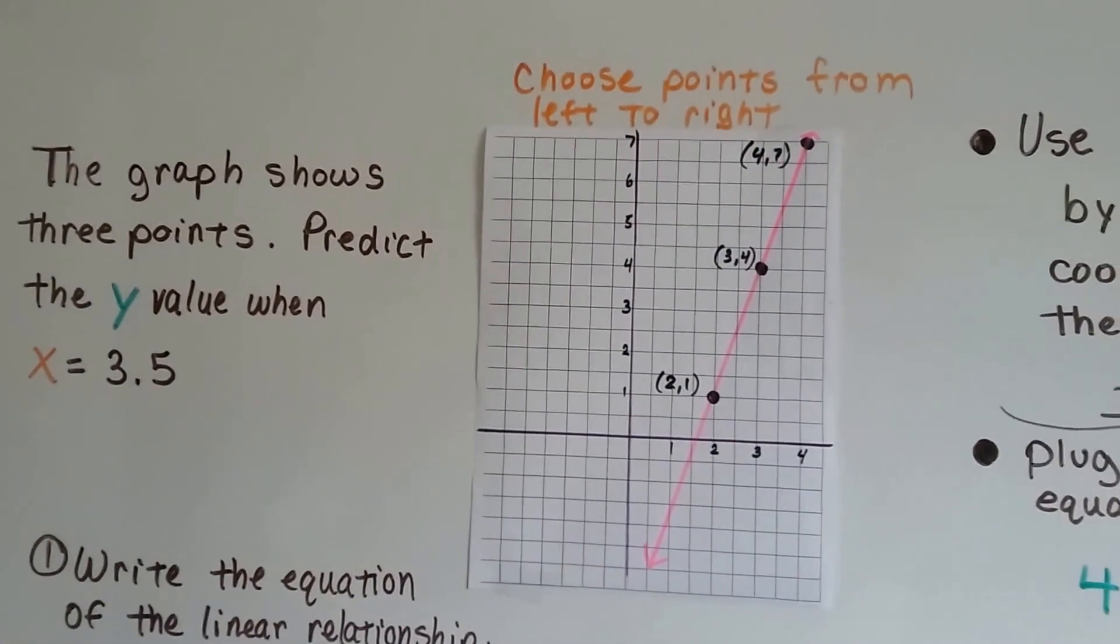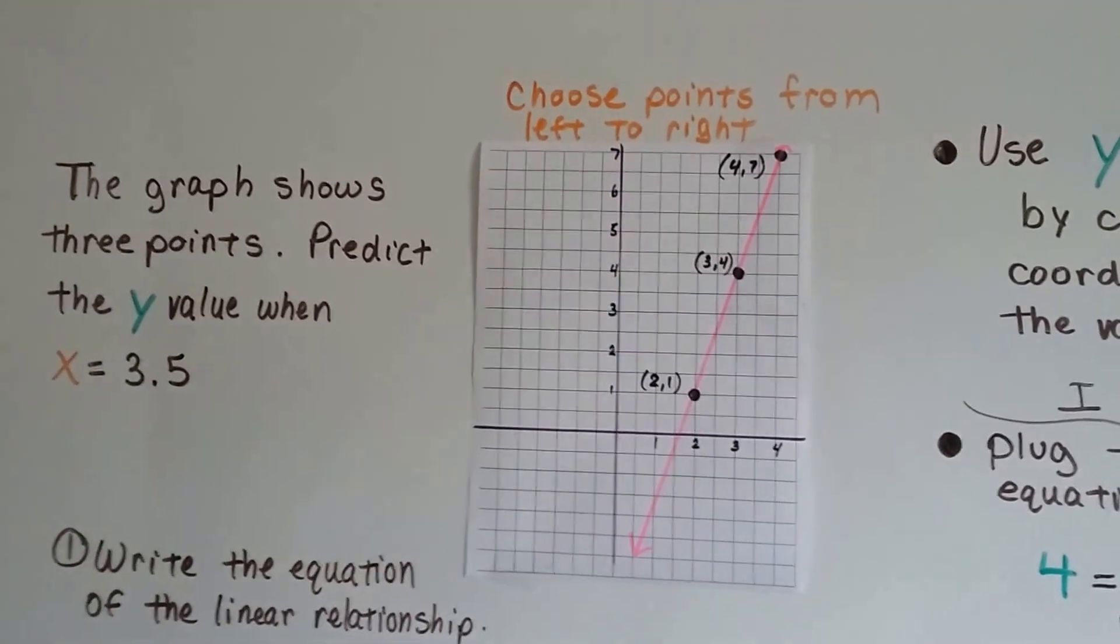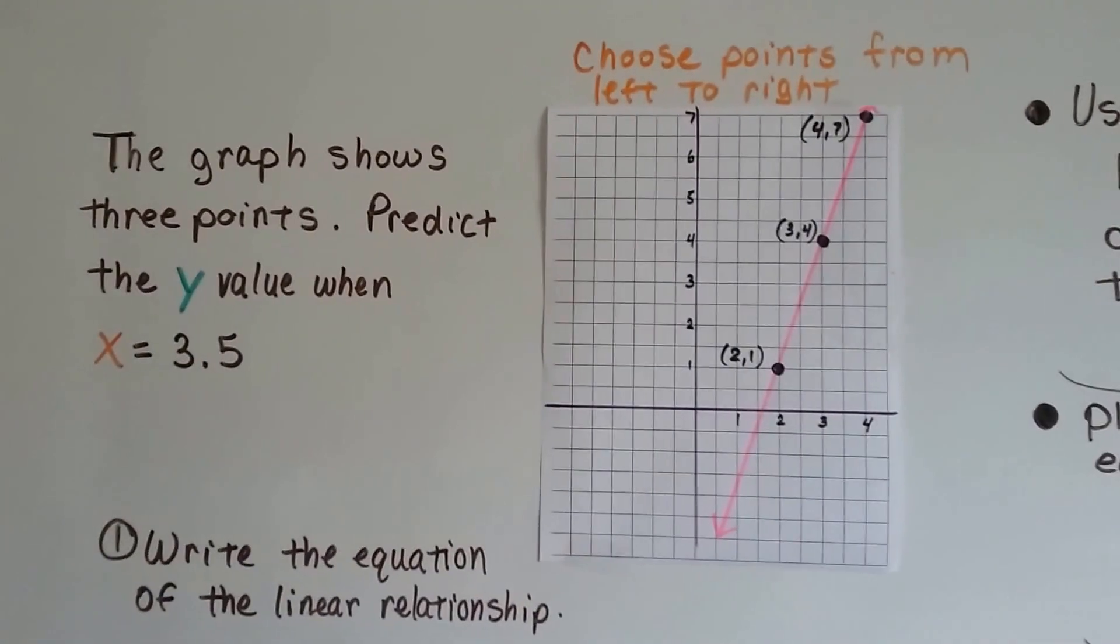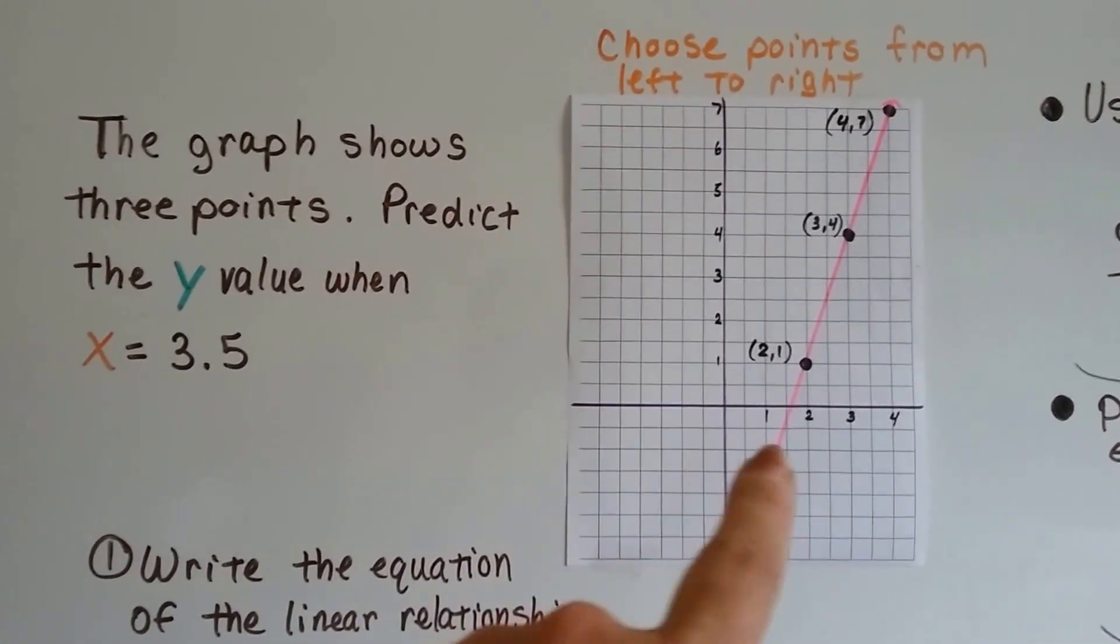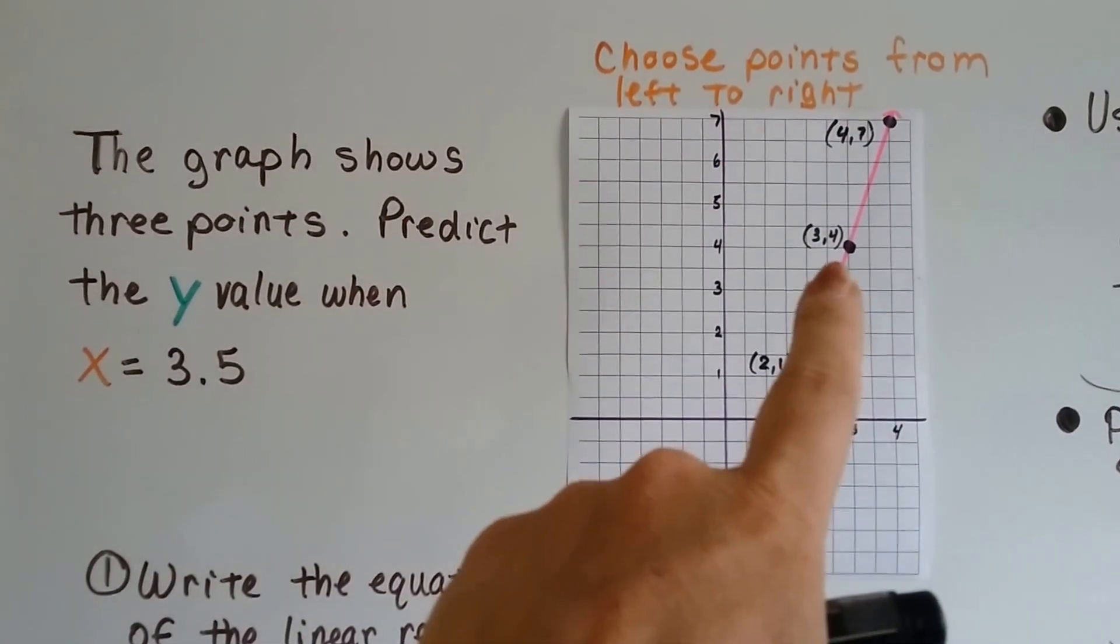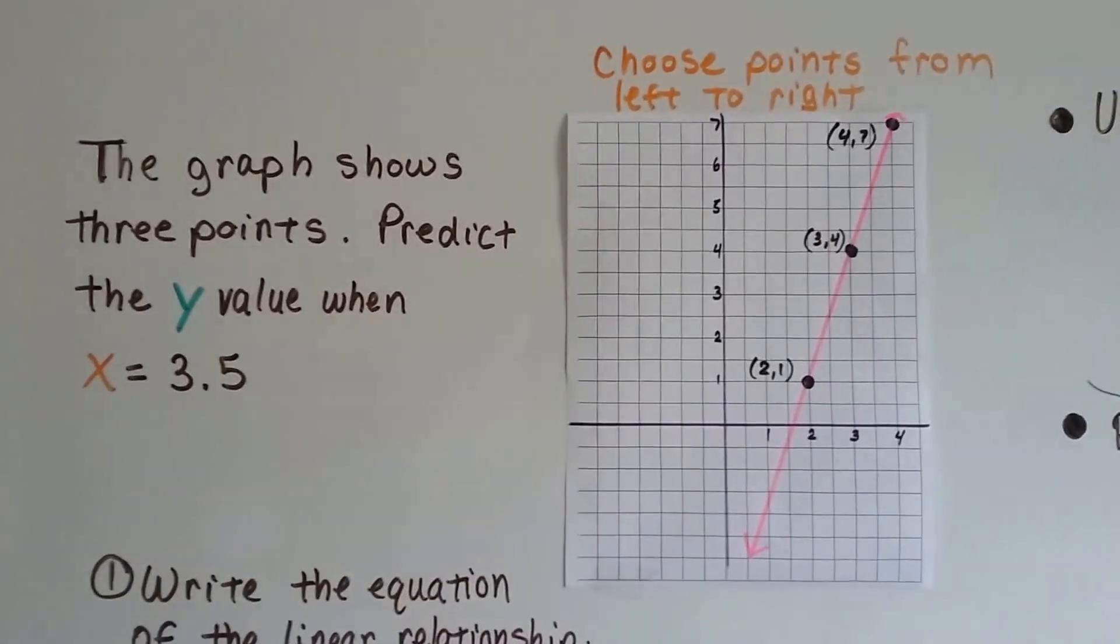So this graph shows three points and we need to predict the y value when x equals 3.5. So we've got 2, 1, 3, 4, and 4, 7.